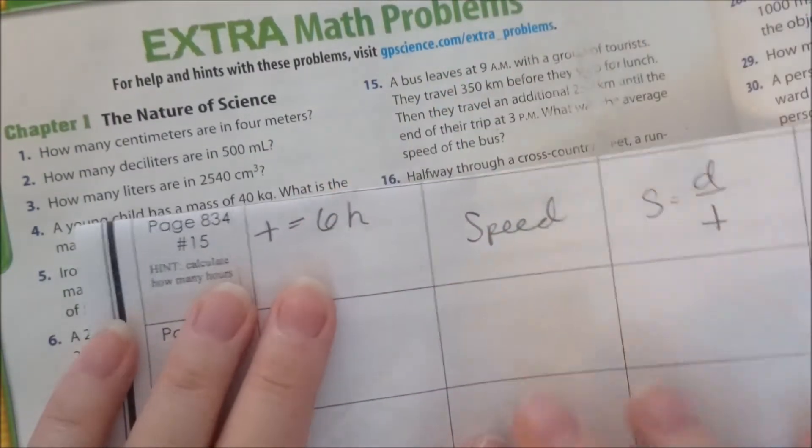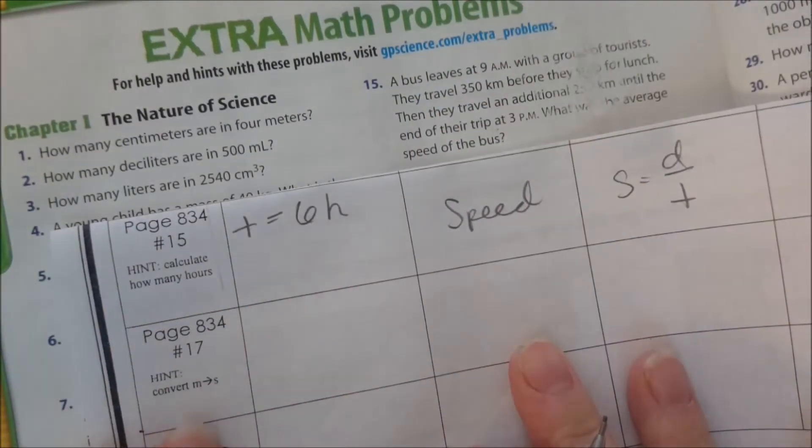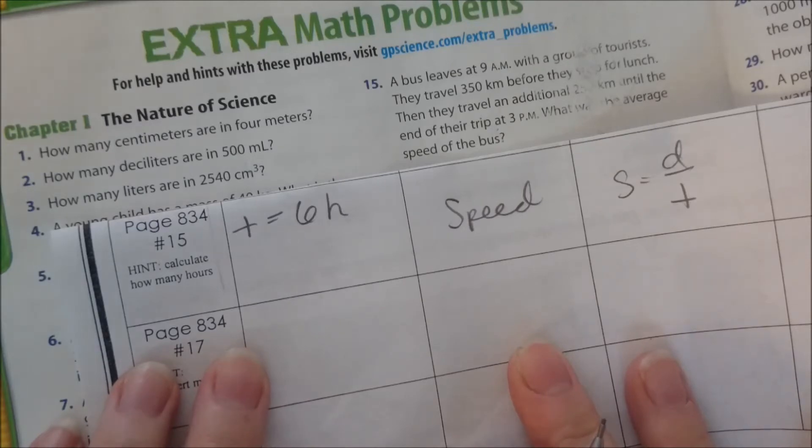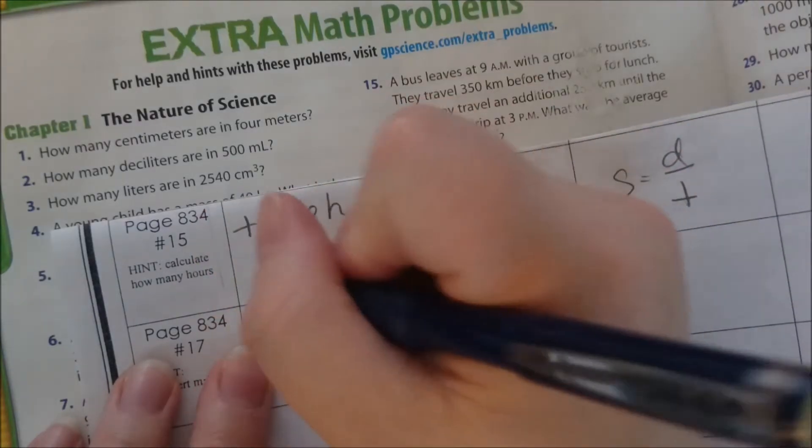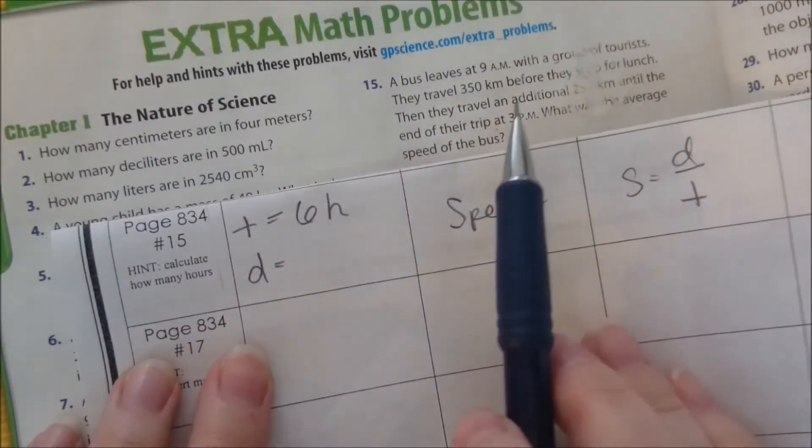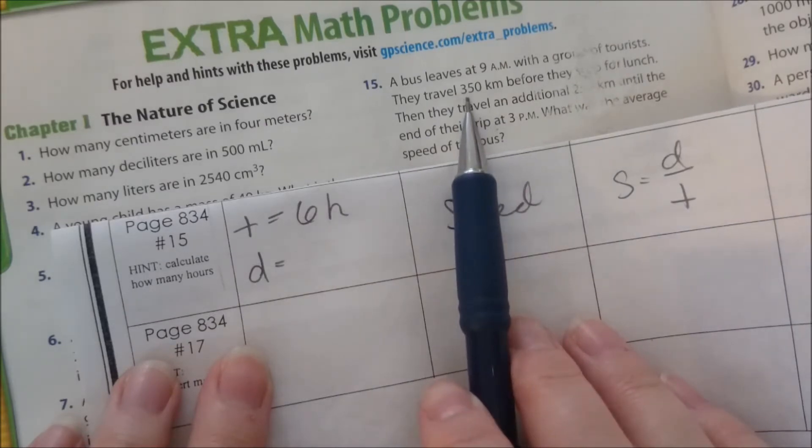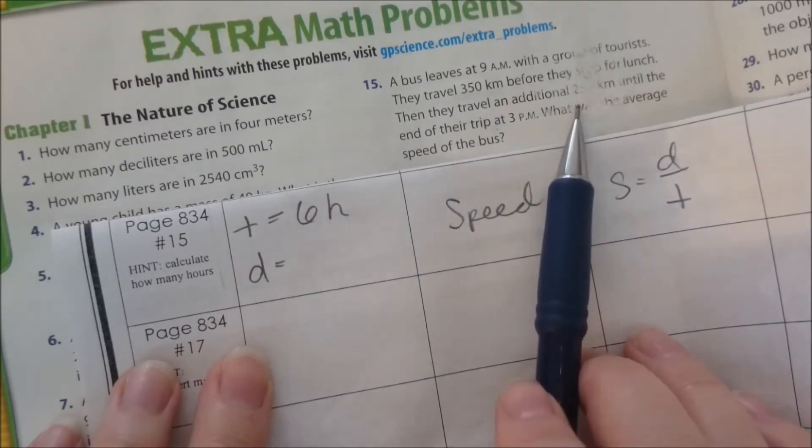Then we have to figure out how far they went. The distance they went before lunch was 350 kilometers, and after lunch they went 250 kilometers. So 350 plus 250 is 600 kilometers.